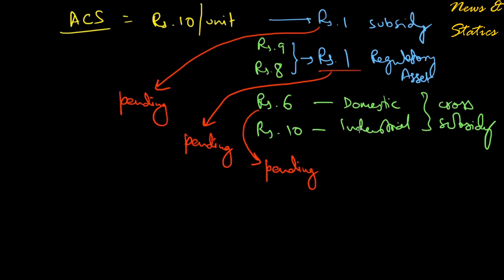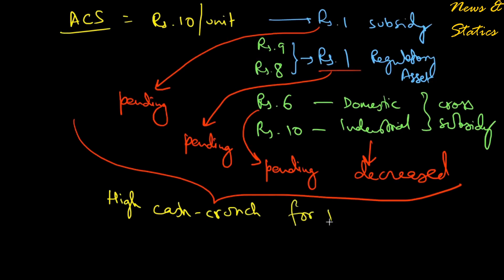The industrial sector which was buying electricity at such a high price suddenly plummeted its demand. All of these things combined resulted in high cash crunch for the DISCOMs. The DISCOMs have to keep business on, so they go into debt and become extremely debt ridden with large amounts of loans pending.